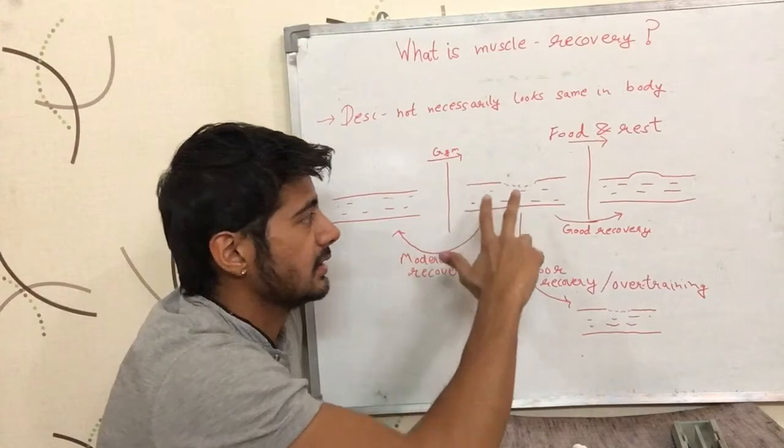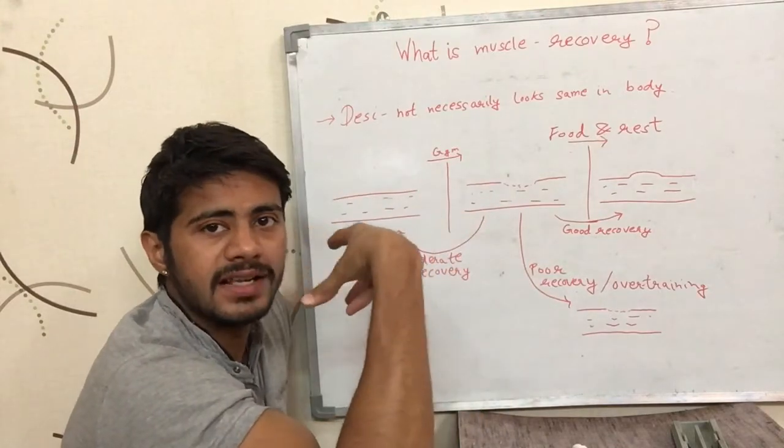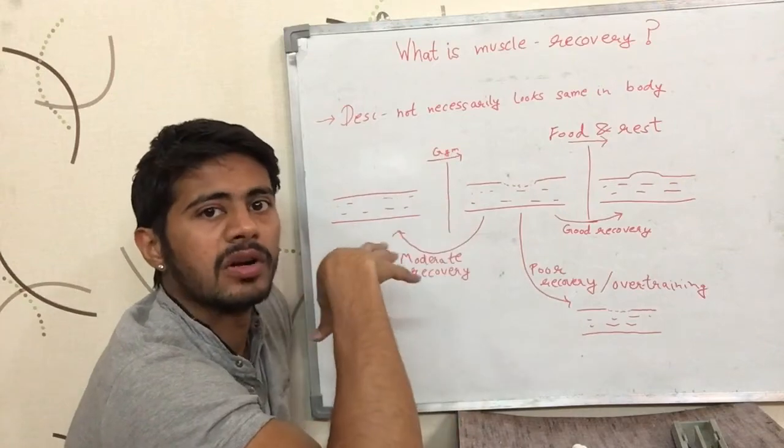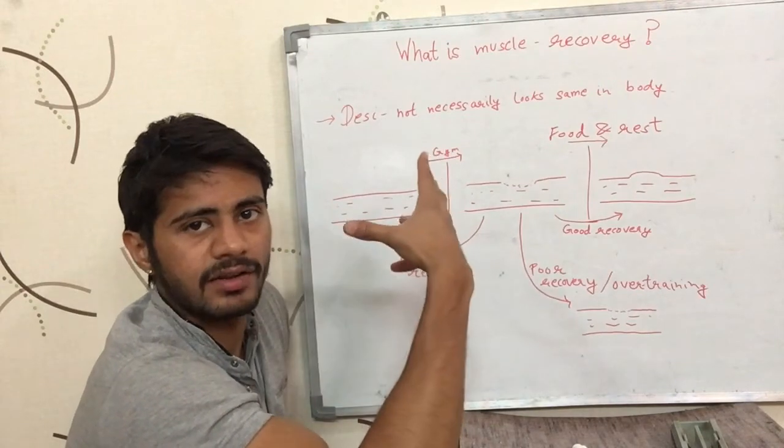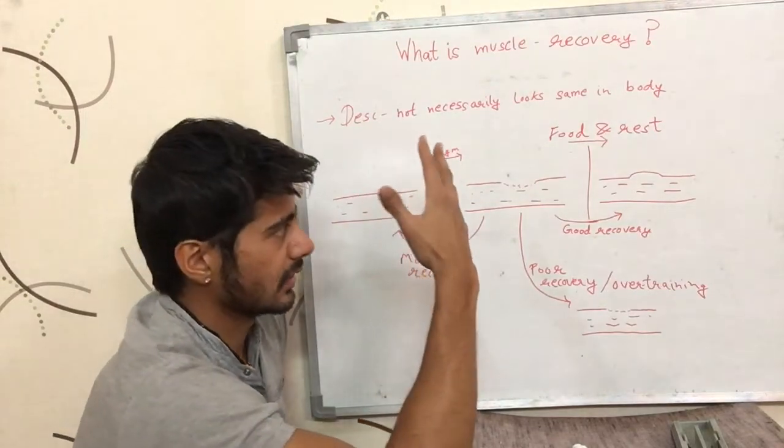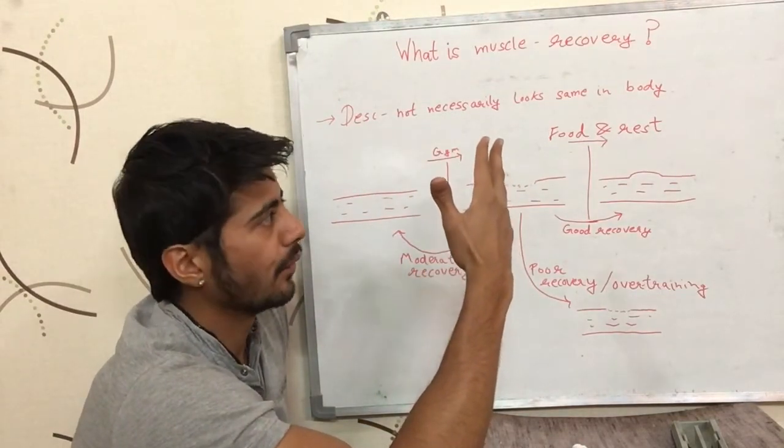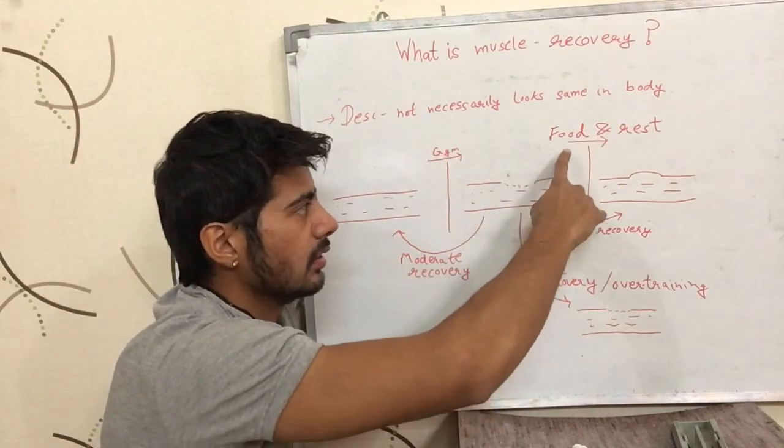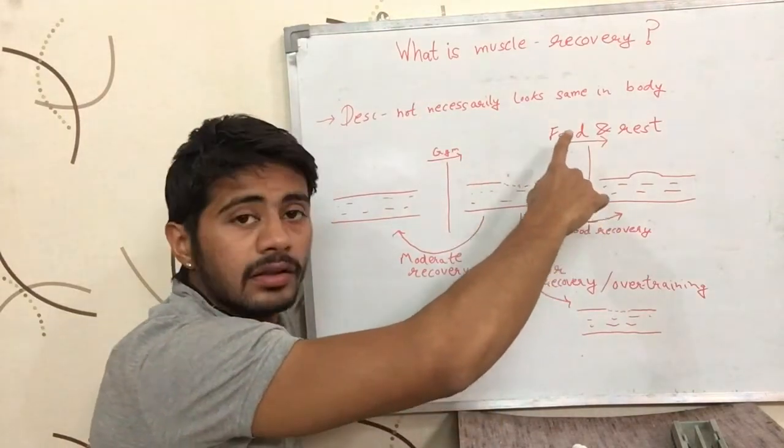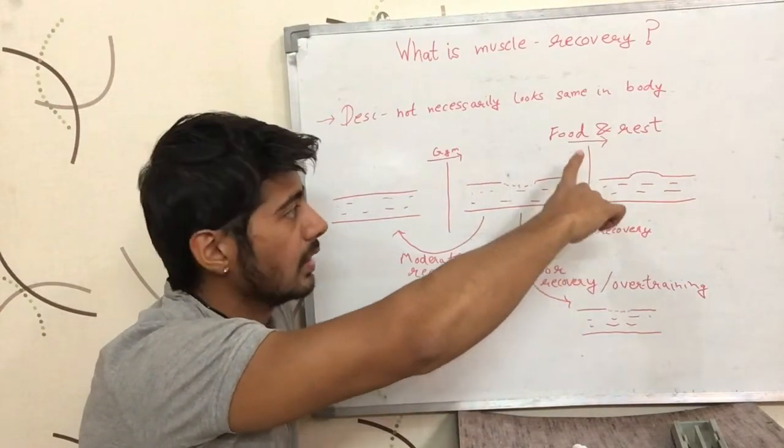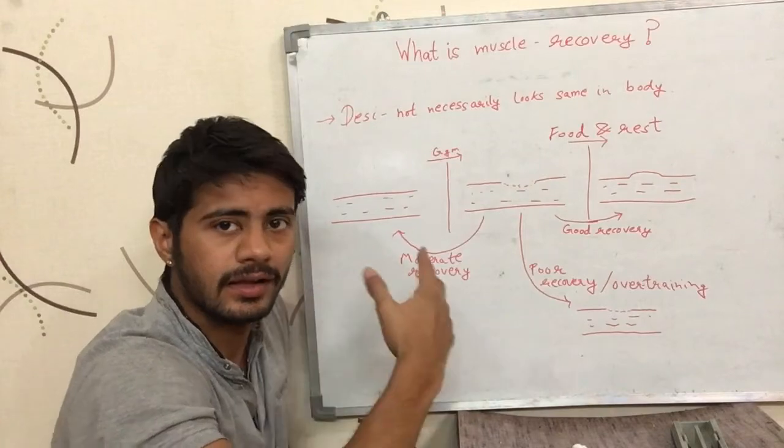Now our body's tendency is to recover the muscle. Our bodies will automatically recover the muscle. And how will that happen? That will happen through food and rest. So if we give our bodies right food and right amount of rest, our bodies will recover.